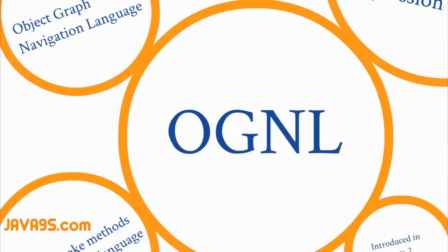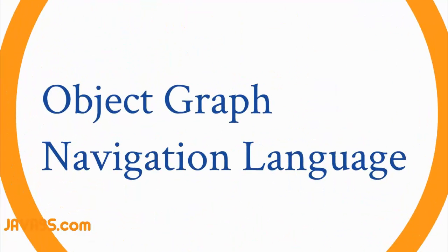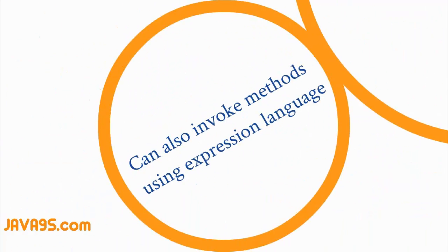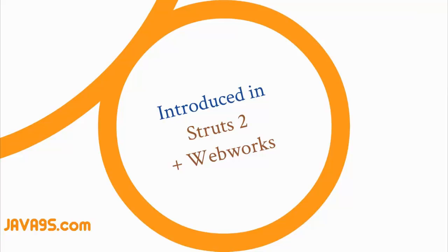Let's talk about the OGNL. It is called the Object Graph Navigation Language — don't relate it to any Facebook-related search; these are not related. OGNL handles two important things in Struts 2: one is type conversion — converting values entered into a form to the corresponding Java types in the bean — and it also offers an expression language to access values inside beans. Additionally, OGNL can invoke methods on Java classes, making it more powerful than a simple expression language. It was integrated when Struts 2 got integrated with WebWork.